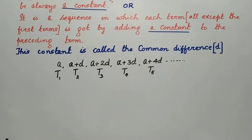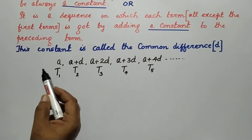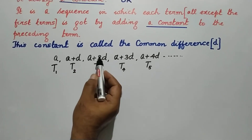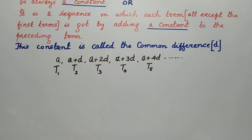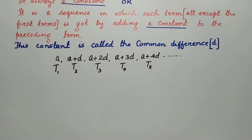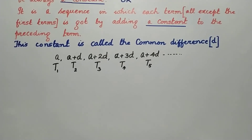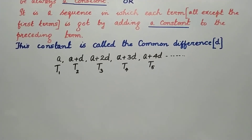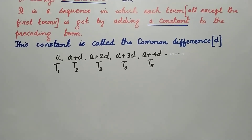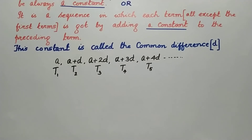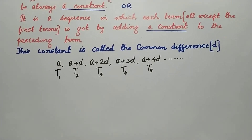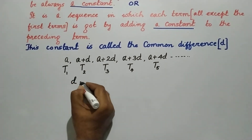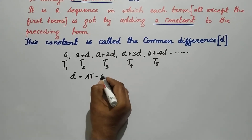So, the general form of an AP is A, A+D, A+2D, A+3D, and so on, where A is the first term and D is the common difference. An arithmetic progression is a sequence of numbers in which the difference between any two consecutive terms will always be a constant, called the common difference, found by any term minus the previous term.